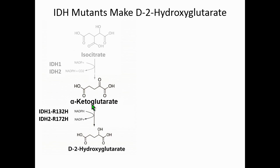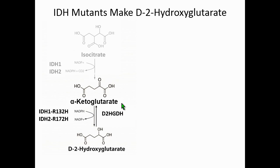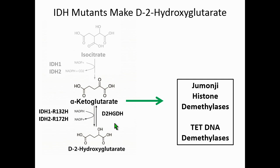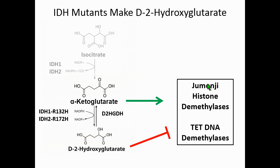We all have D2-hydroxyglutarate in our cells, but typically it's kept at very low levels; it accumulates to very high levels in these tumors. Currently there's no known function for this metabolite, but I think it's a matter of time before that's worked out. Our cells do seem to actively keep D2-hydroxyglutarate levels low through an enzyme called D2-hydroxyglutarate dehydrogenase. In tumors where D2-hydroxyglutarate accumulates to high levels, it has been shown to inhibit a number of demethylases—a family of histone demethylases and a family of DNA demethylases—and it's thought that inhibition of these demethylases is involved in tumor progression, although the mechanism is not clearly defined.